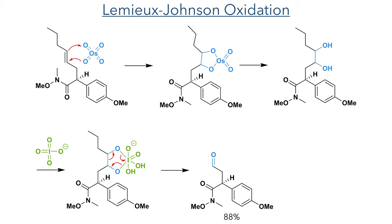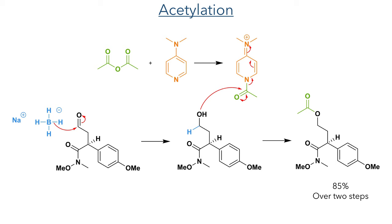This aldehyde was then reduced with sodium borohydride, and the alcohol was acetylated using a mixture of acetic anhydride and DMAP. The DMAP acts as a nucleophilic catalyst, which first reacts with the acetic anhydride to form a cationic intermediate that is a better acetylating agent than the anhydride itself. The DMAP is regenerated upon acetylation of the alcohol and can go on to react further. Overall, the targeted acetate was produced in an 85% yield over 2 steps.